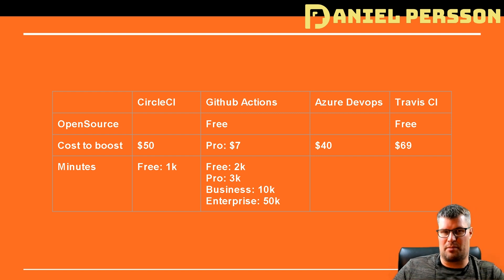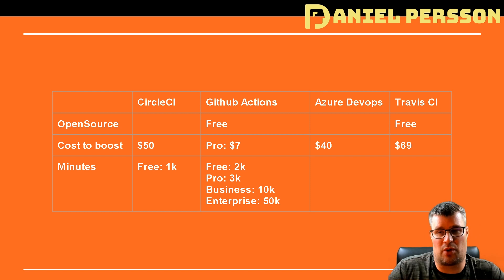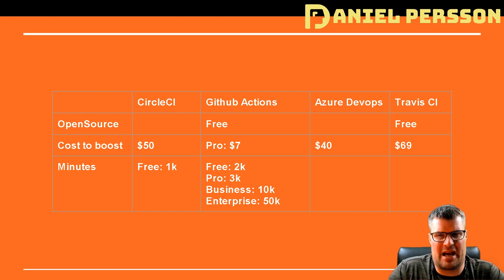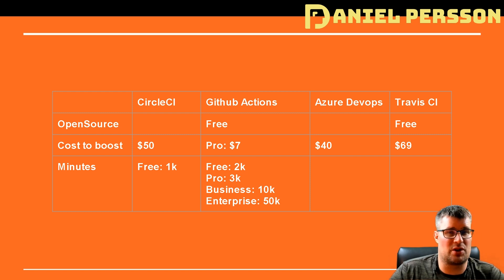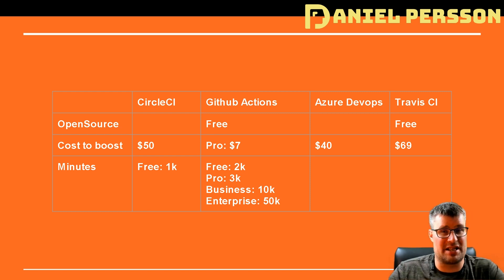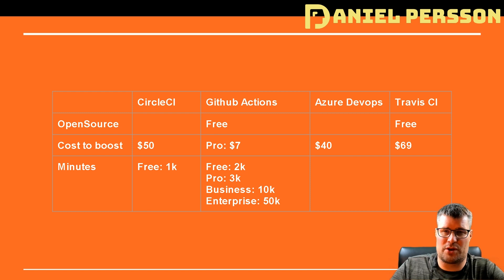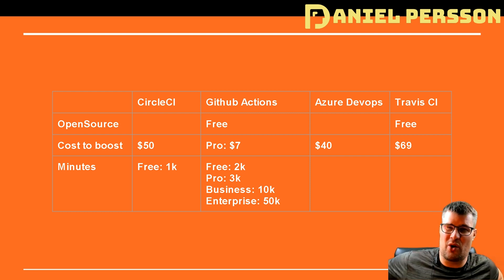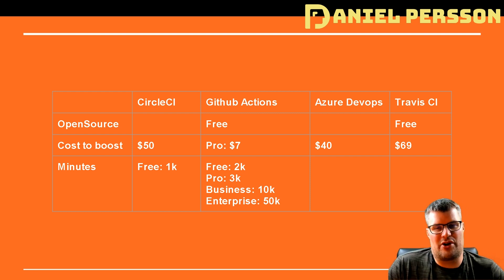I do a lot of open source so I thought it was interesting to see if some of them actually supported open source. GitHub Actions is free for open source or public repos and Travis CI is also supporting open source — everything is free on Travis CI. I didn't see that kind of commitment from CircleCI or Azure DevOps.